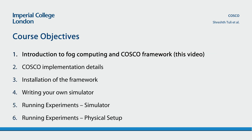This course is divided into six chapters. First, we will get a basic understanding of fog computing, particularly on why this new paradigm is a hot topic of research today, and how it might impact the world in the coming future. We will also discuss the COSCO framework, how it works, and what functionalities it provides, particularly the co-simulation feature of COSCO.